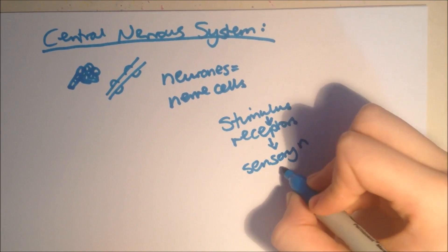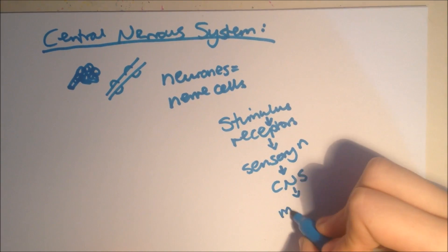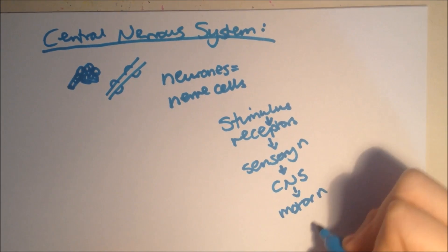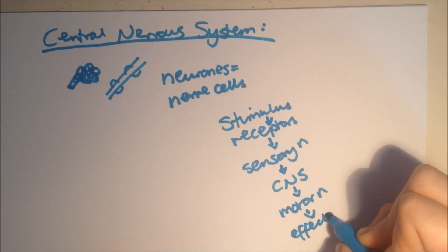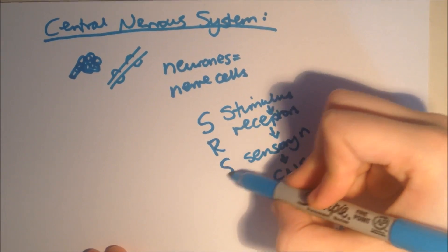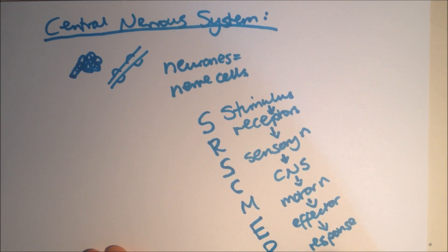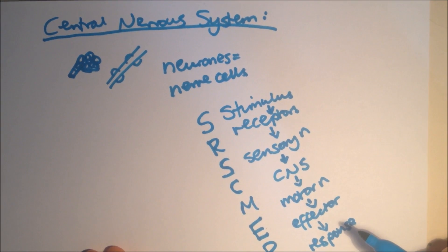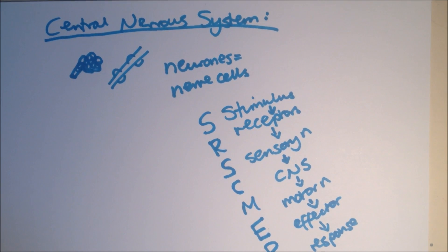and then after it's reached the CNS, the motor neuron. So, the CNS sends information to an effector through the motor neuron. And then it responds accordingly. There's stimulus, receptors, sensory neuron, CNS, motor neuron, effector, and response.